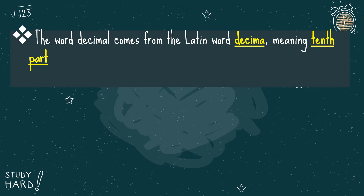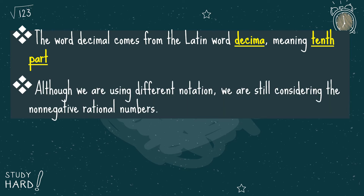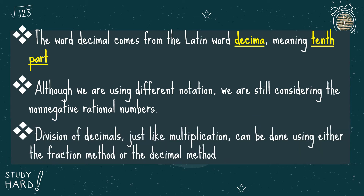The word decimal comes from the Latin word decima, which means tenth part. Although we are using different notation, we are still considering the non-negative rational numbers. Division of decimals, just like multiplication, can be done using either the fraction method or the decimal method.